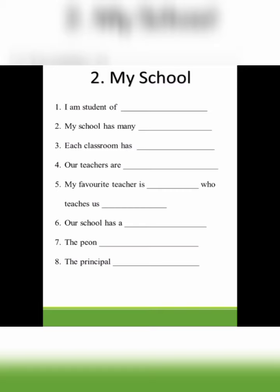The second picture composition is My School. Write eight sentences about your school. Number one: I am a student of dash — write the name of your school, for example Christ the King Convent School. Number two: My school has many classrooms. Each classroom has two doors, four fans, or two lights — whatever you want to write, but write the correct spellings.